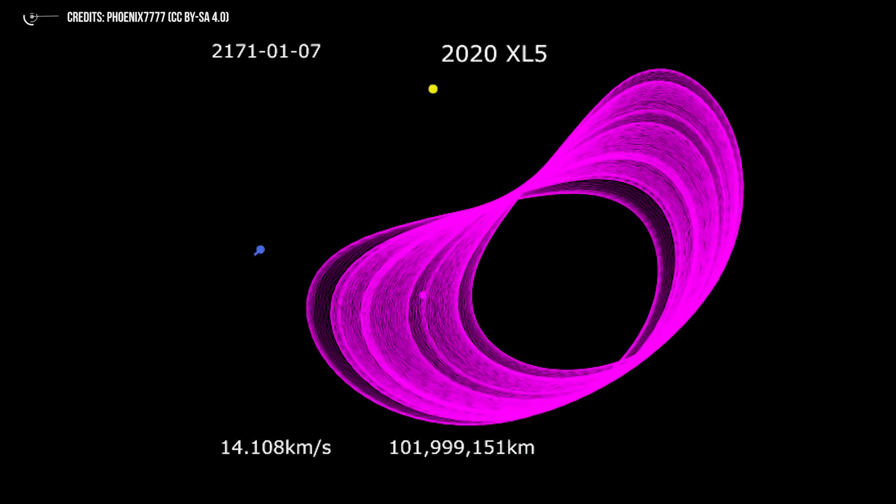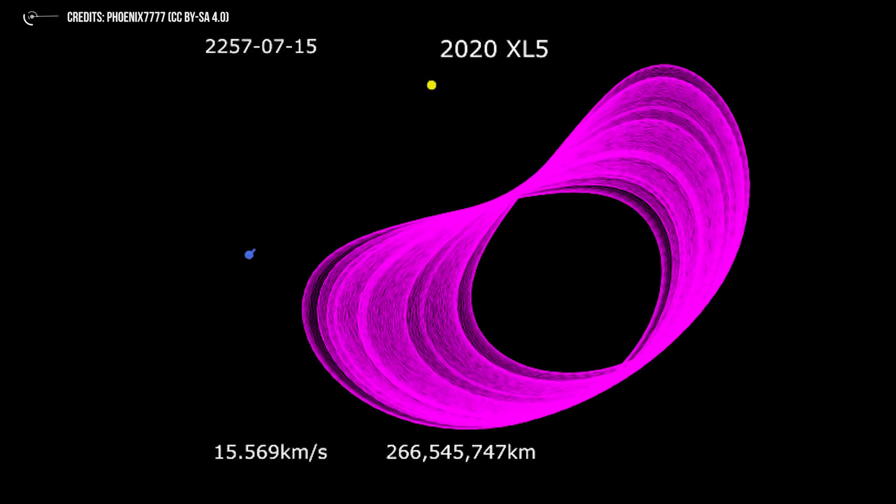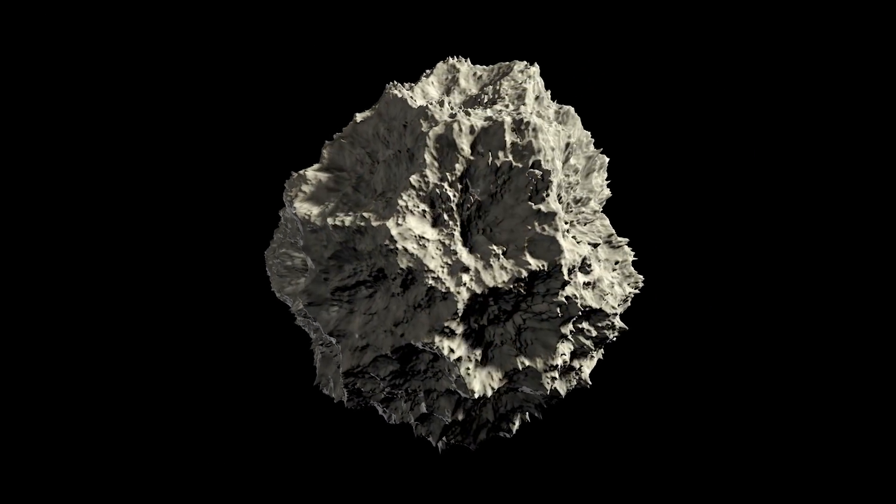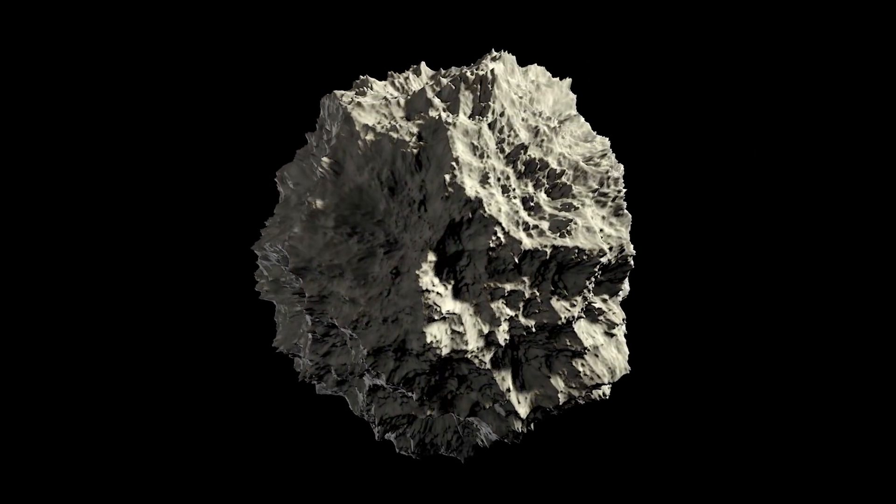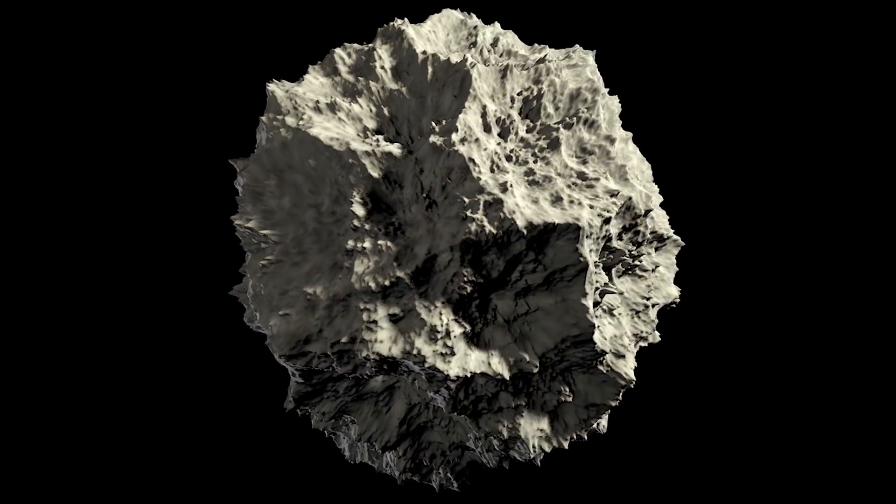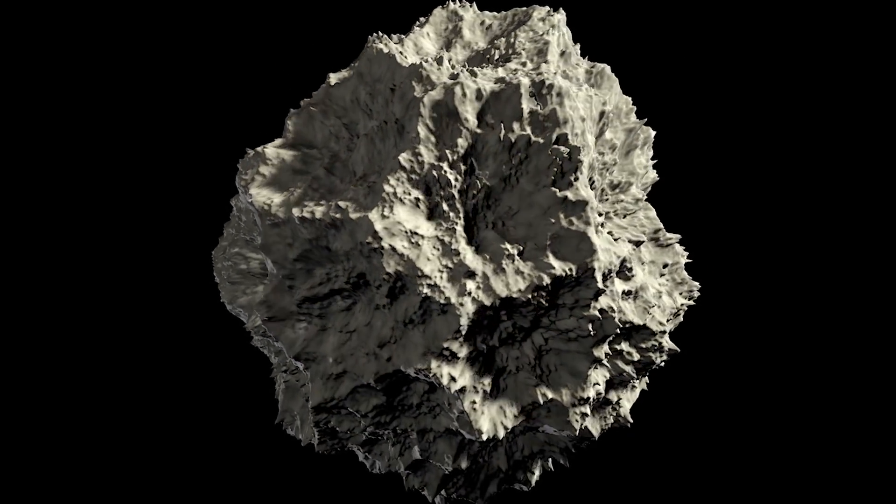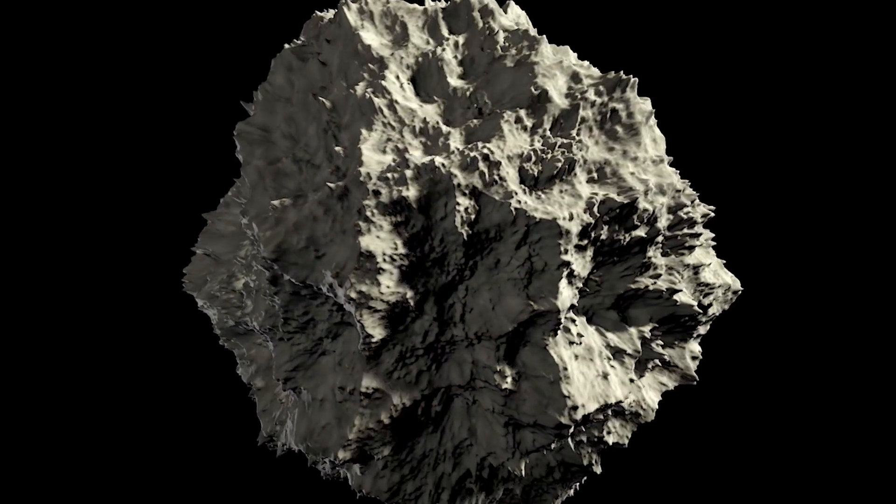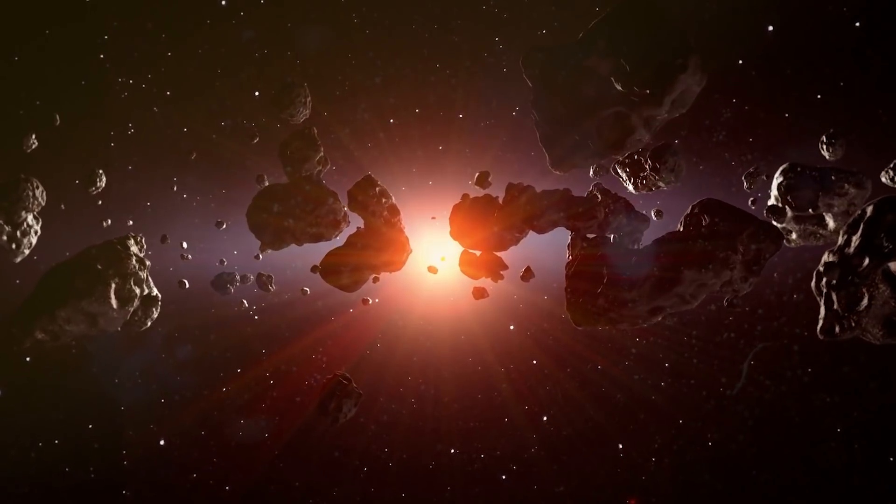XL5 has a diameter of 1.2 km, three times larger than TK7. The first photometric analysis of the object has revealed that 2020 XL5 is probably a C-type asteroid with a predominantly carbonaceous composition. For this reason, it is a very dark asteroid with the size of about 1.2 km. Are there only two terrestrial Trojans? No, there could be many more. The problem is to find them.